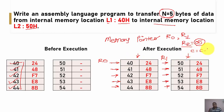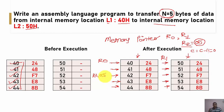Once one memory byte transfer is completed, we decrement the count by 1 and check whether it equals 0. If not, we repeat the process: first initialize memory pointers R0 with 40H and R1 with 50H, transfer the block, then increment the memory pointers by 1. The counter R2 starts at 05, then becomes 04, 03, 02, 01, and finally 00. Once it reaches 0, we stop execution and the 5 memory blocks are fully transferred.